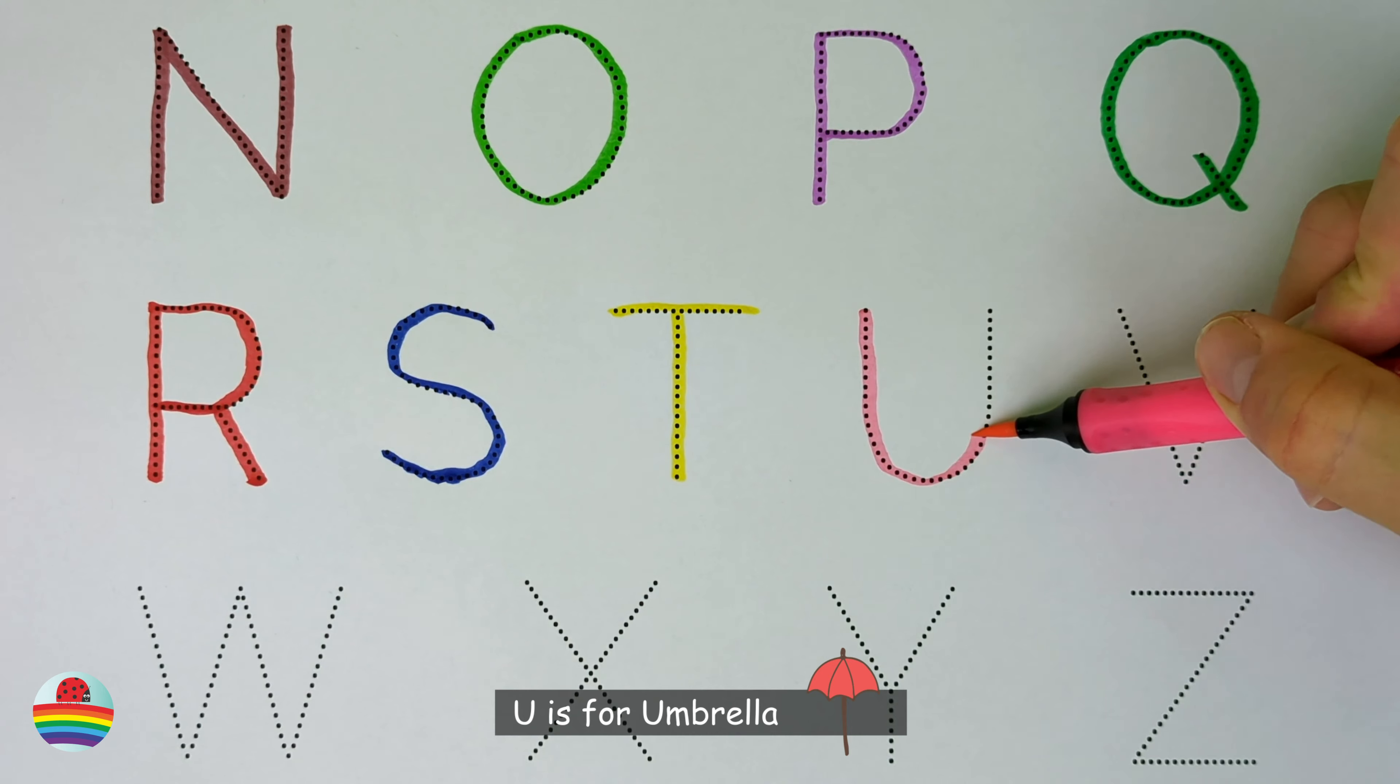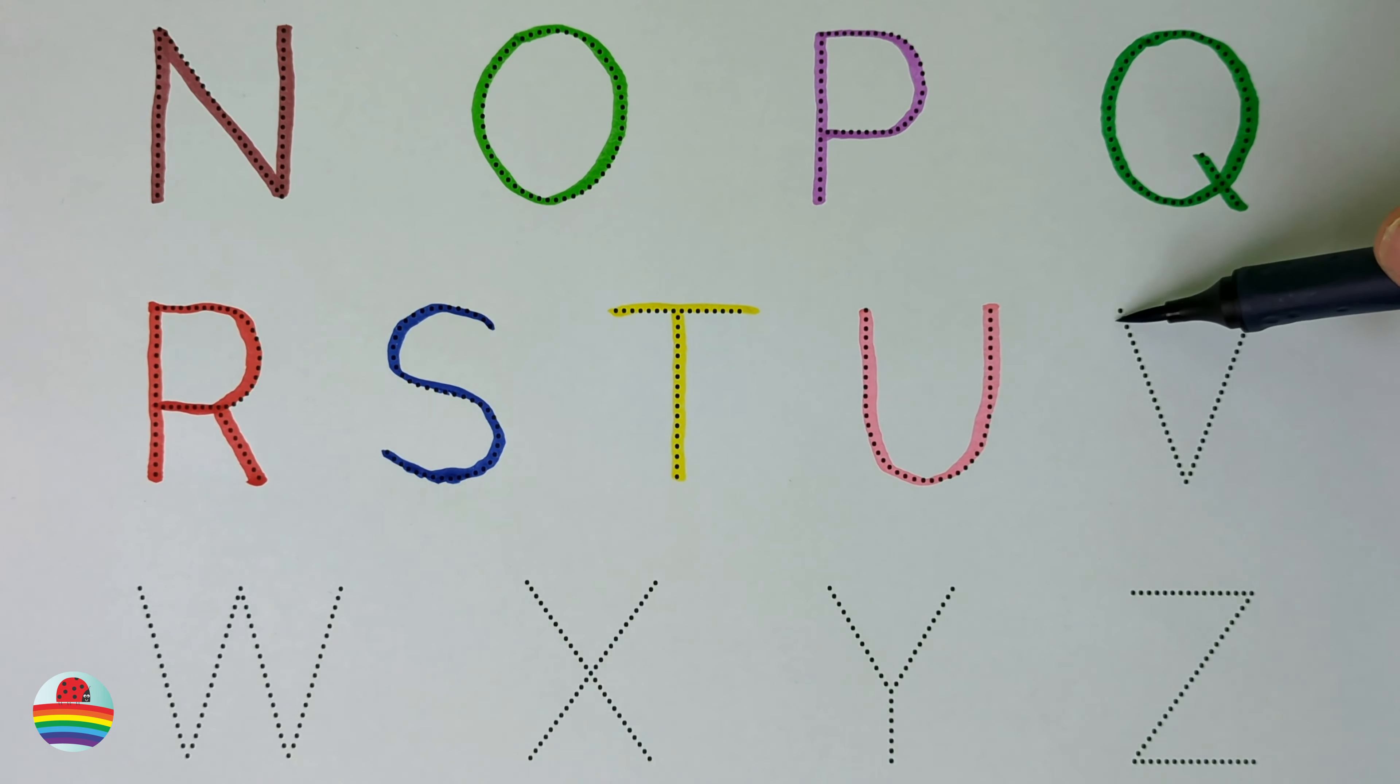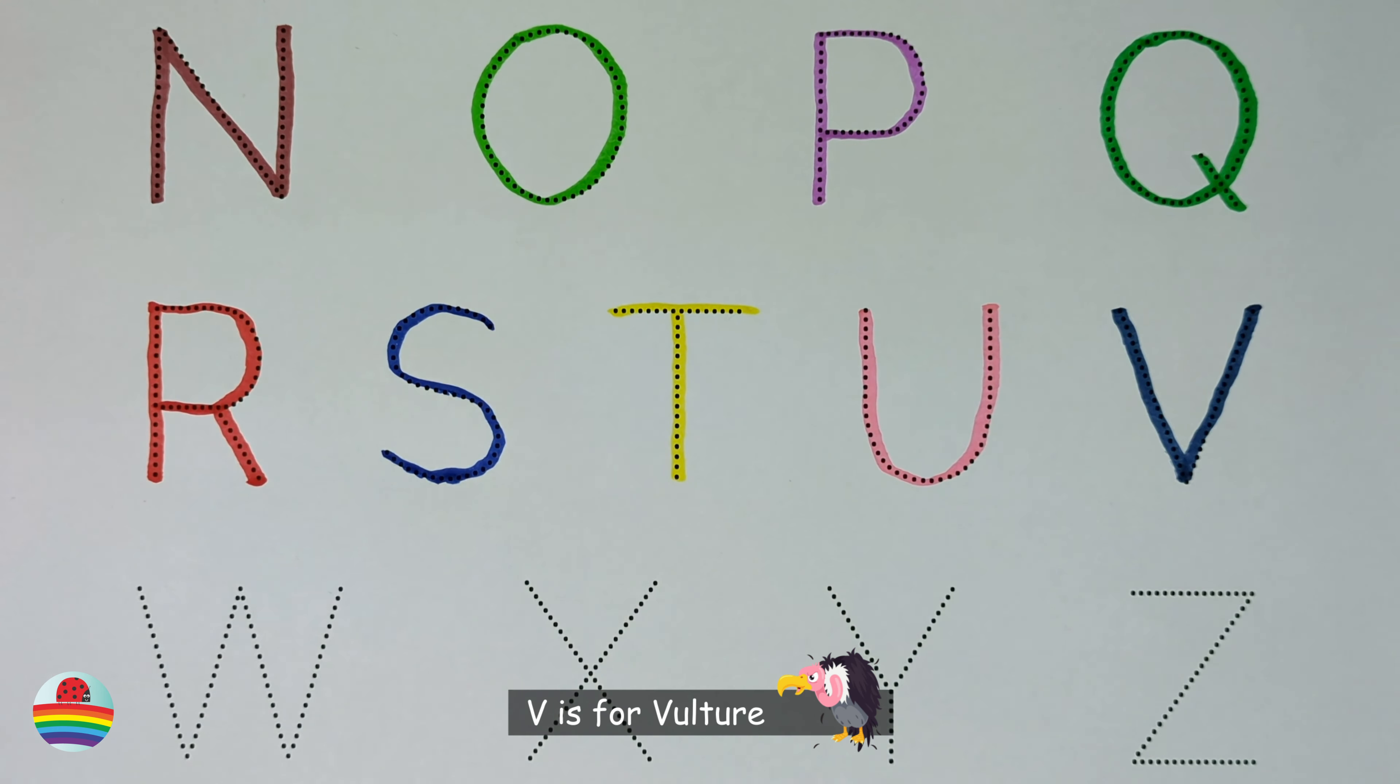U. U is for Umbrella. U. V. V is for Vulture. V.